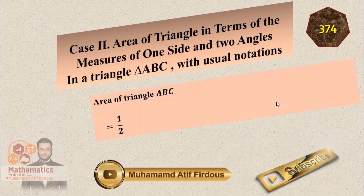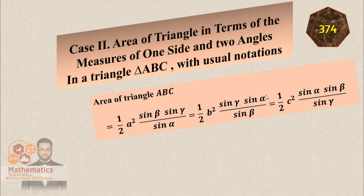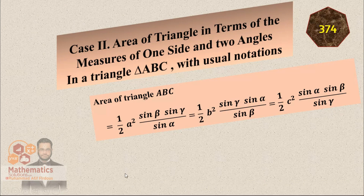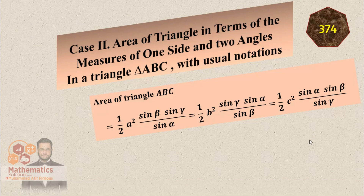We also have delta equal to one-half a-squared times sine beta times sine gamma over sine alpha; b-squared times sine gamma times sine alpha over sine beta; and sine alpha times sine beta over sine gamma. This is another form of the area formula using the sine rule.